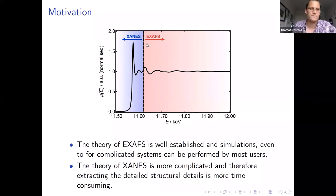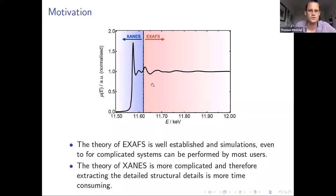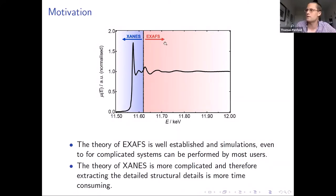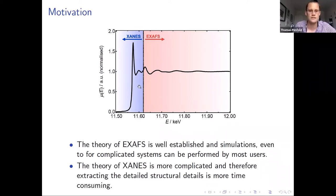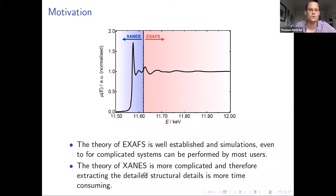For a long time, thanks to a lot of work coming out of the University of Washington, the EXAFS region has been as close to a solved problem as you can get. Even for complicated systems, running simulations and analyzing the data can be achieved in relatively quick computational time. However, as we get to the near edge region, the more complicated physics involved in the shape and position of the spectra means that extracting structural details is particularly challenging. With the improvement of synchrotrons, it's now possible to get very high-resolution data on operating catalysts and batteries, and being able to interpret that and account for the disorder and complexity of these systems is one aspect we're particularly interested in.